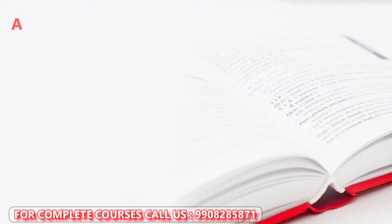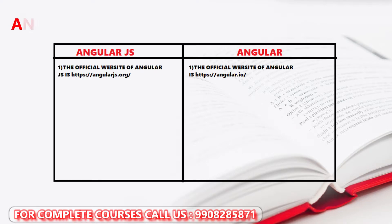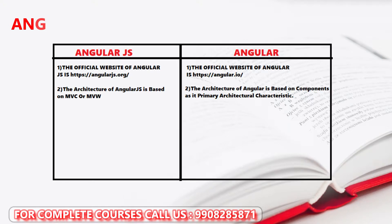The first simple difference is that AngularJS and Angular have two different websites. AngularJS is at angularjs.org and Angular is at angular.io. This is the first difference.